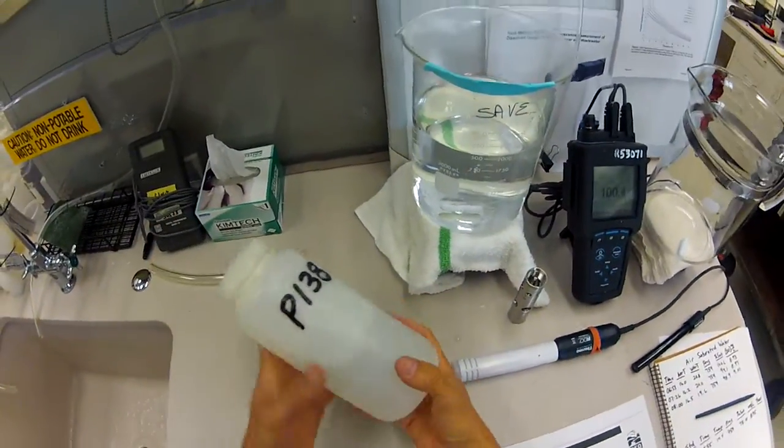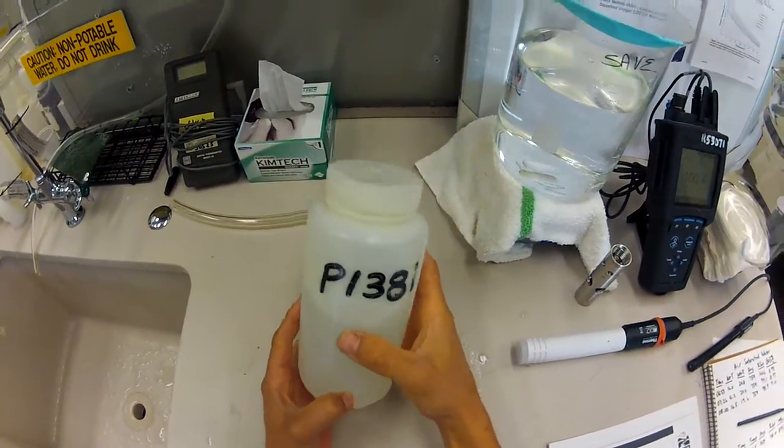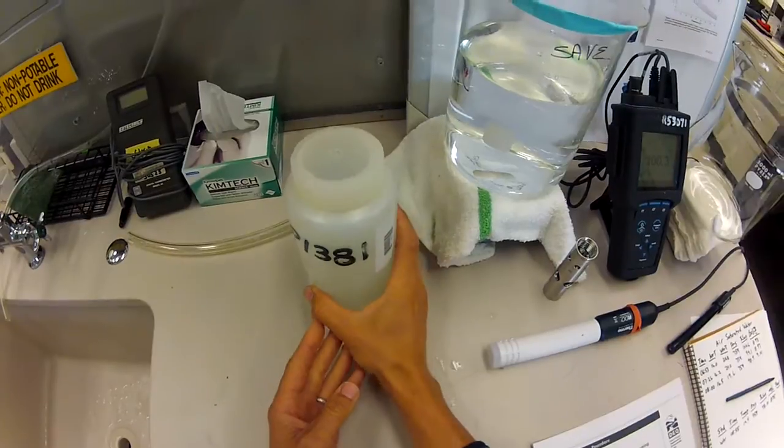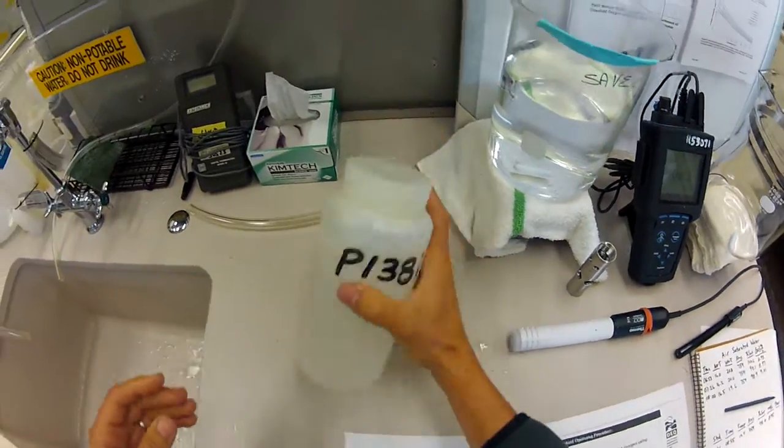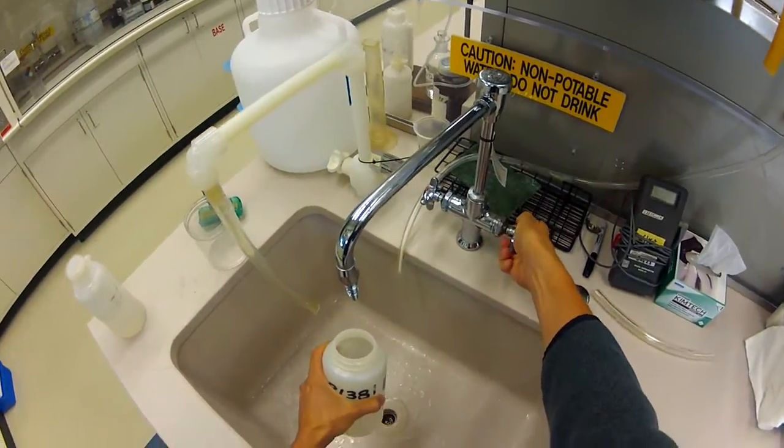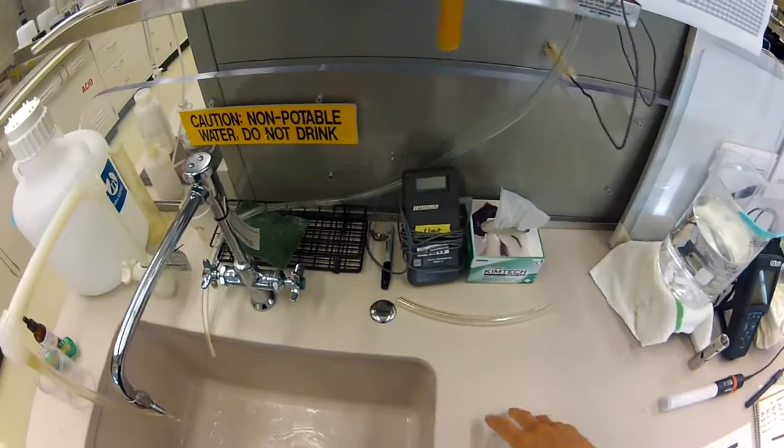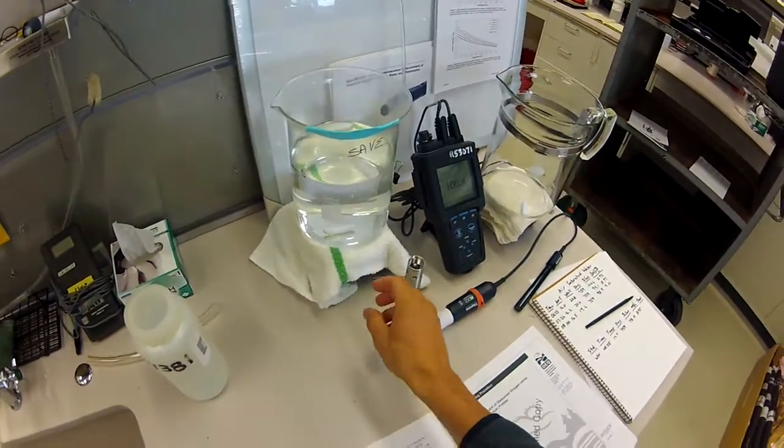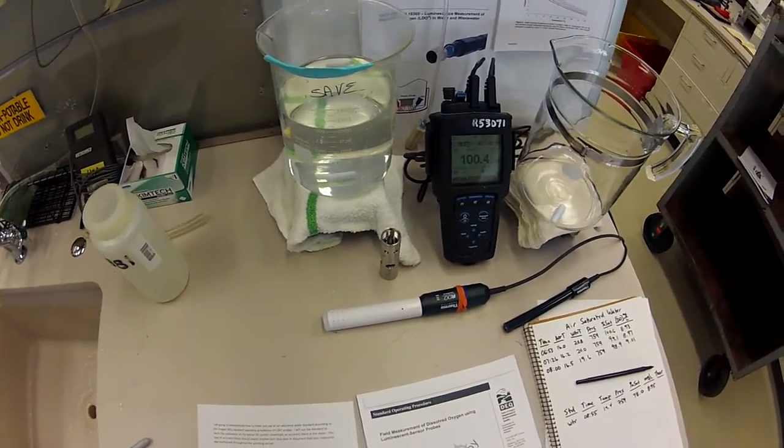You could do the same thing with a bottle filled with water and some headspace here, some air in it, and you could shake it. But you would have to be very careful that you didn't oversaturate or supersaturate the water, which you can easily do. Shaking can push too much air into the water. Even if you crank up a stir bar really fast, there's a potential that you could supersaturate. So we want to do things moderately in this process.